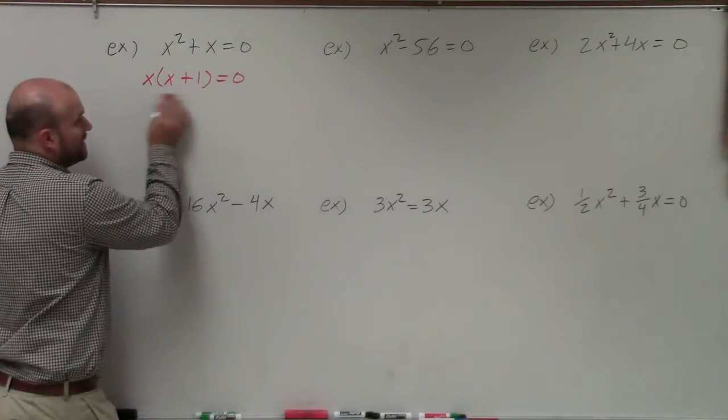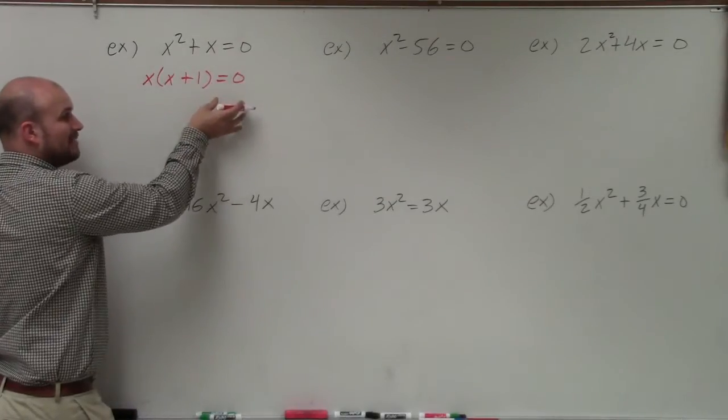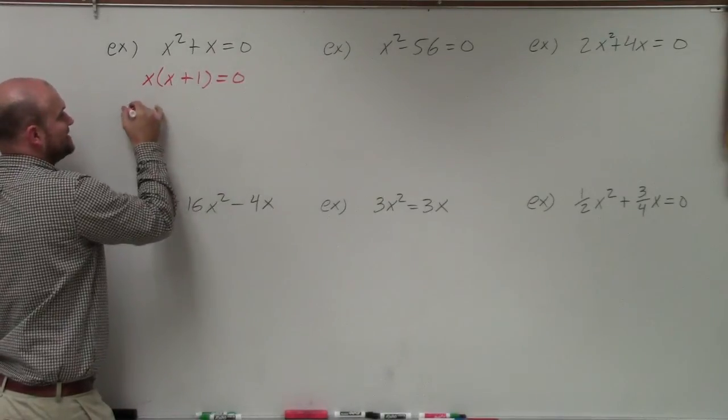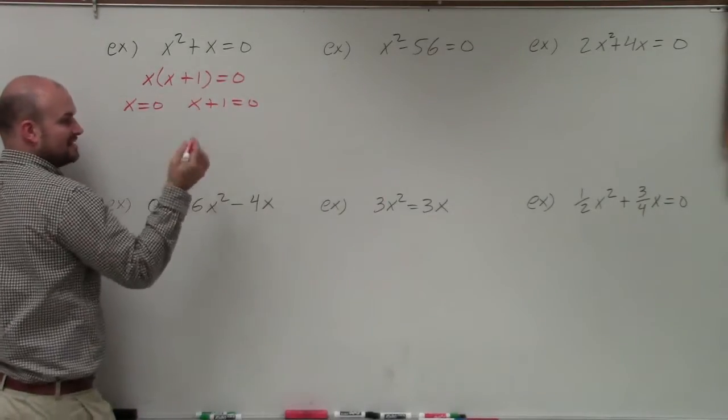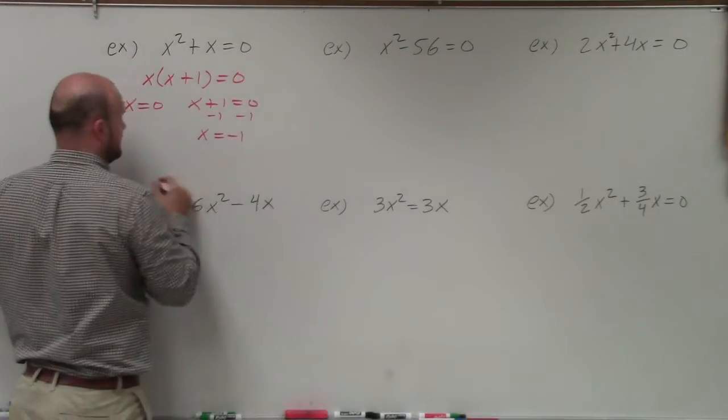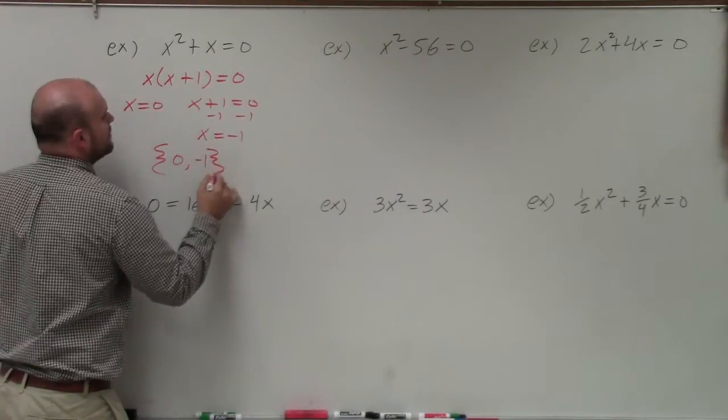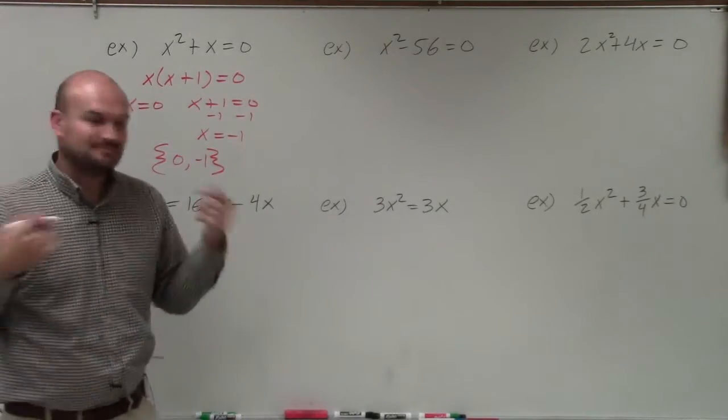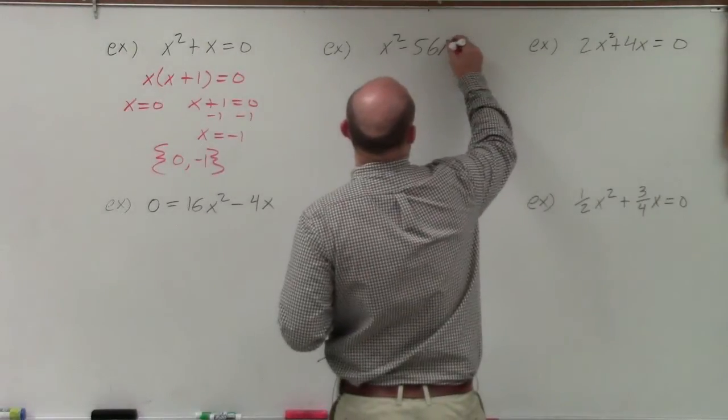Now I have the product of two expressions equal to zero. So by applying the zero product property, I can set them both equal to zero to solve. I have x is equal to zero. That's done. And then I subtract 1 here, and I have x is equal to negative 1. So my solution set for this one is 0, negative 1.